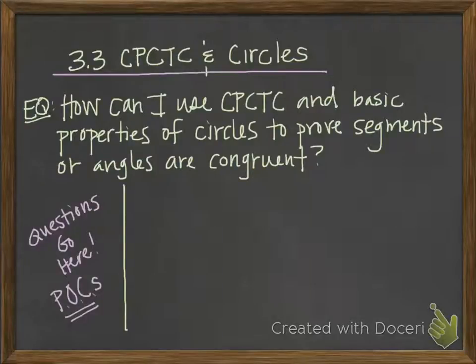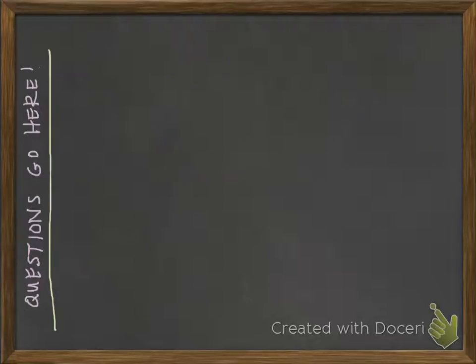Hi, these notes are over 3.3 CPCTC and circles. The essential question is: how can I use CPCTC and basic properties of circles to prove segments or angles are congruent? In these notes we're going to talk about circles, what a circle is, and review some of the pieces of a circle that we know about. We're also going to talk about something new called CPCTC, but we're going to talk about the circles first.